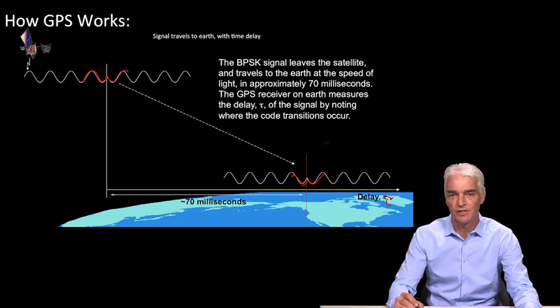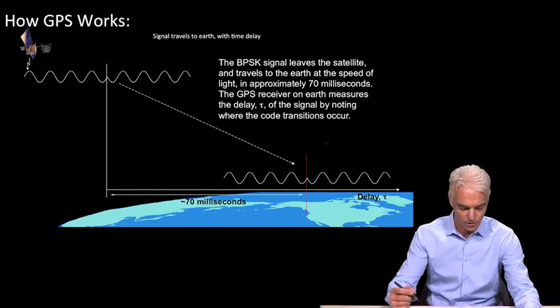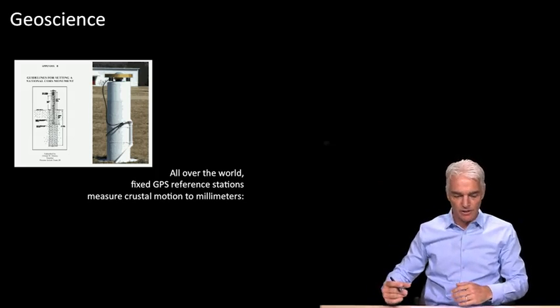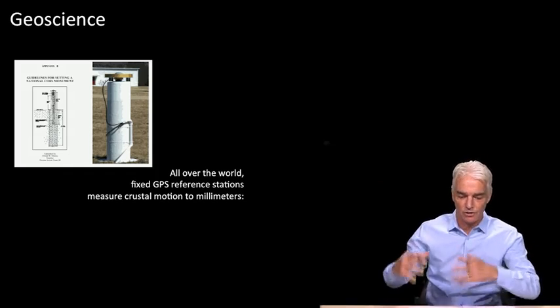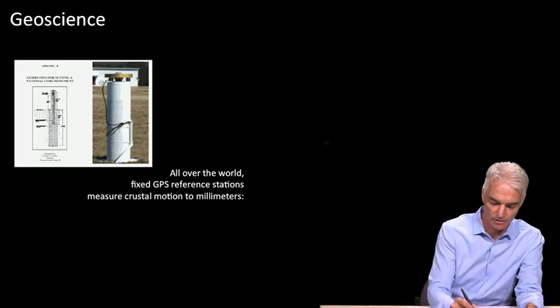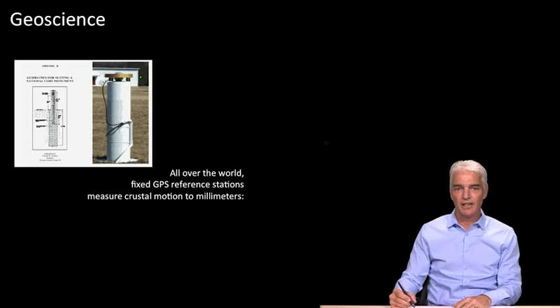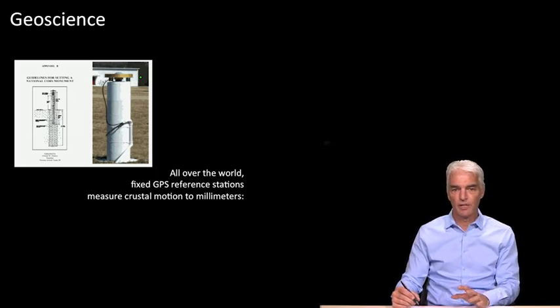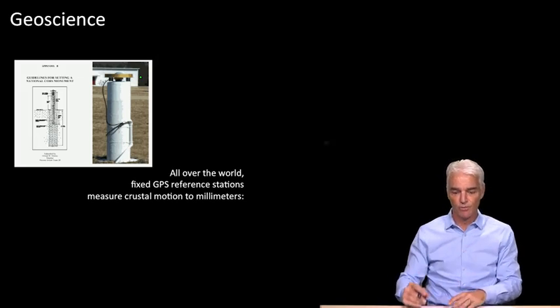So before going into some of the deeper details, I want to give you a little snapshot of some uses of GPS that maybe you're not so familiar with. You're probably all familiar with navigating in your cars or using GPS to geotag your photographs. But GPS is used in a whole range of sciences, including geoscience. An example of this is something called the Continually Operating Reference Stations. And what these are are things known as monuments, which are tall concrete pillars that are concreted deep into the ground and stand up about as high as a person. And on top of that is a GPS antenna, as you can see in this picture right here.